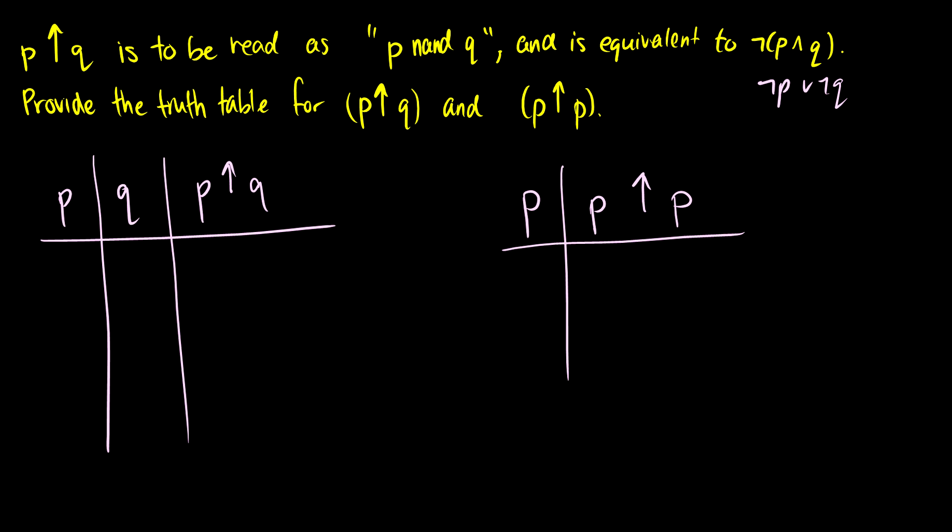Possible combinations for p is 1, 1, 0, 0. Q is going to be 1, 0, 1, 0. This is true when either not p or not q is true. So in the first row p is true, q is true, so p up q will be false. In the second, third and fourth row at least one of them is false so these are all true.